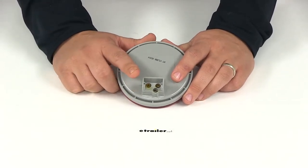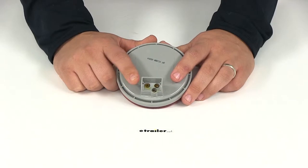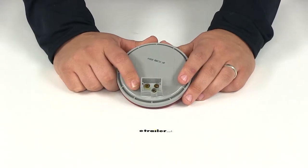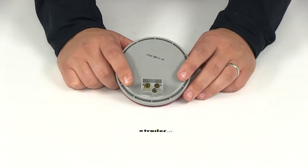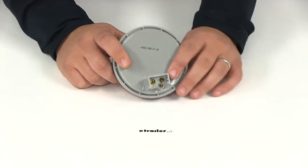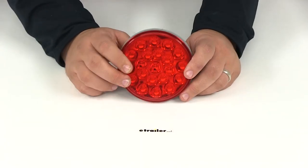If you need a right angle plug, you can use part number 847PB, or a straight plug like I'll be using in our demonstration today with part number 845PB. Those can be found at eTrailer.com. It features 21 red LEDs.